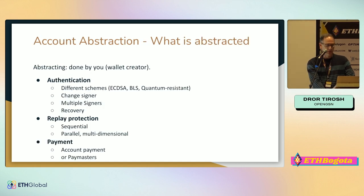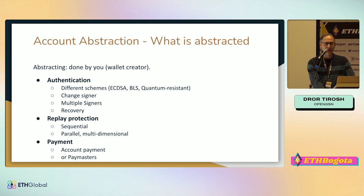So we have a wallet. A wallet is a contract, and the contract can abstract the authentication — it can do whatever it likes, replace the signature. It can use ECDSA, it can use BLS for aggregation, or other things. It can do quantum resistance.